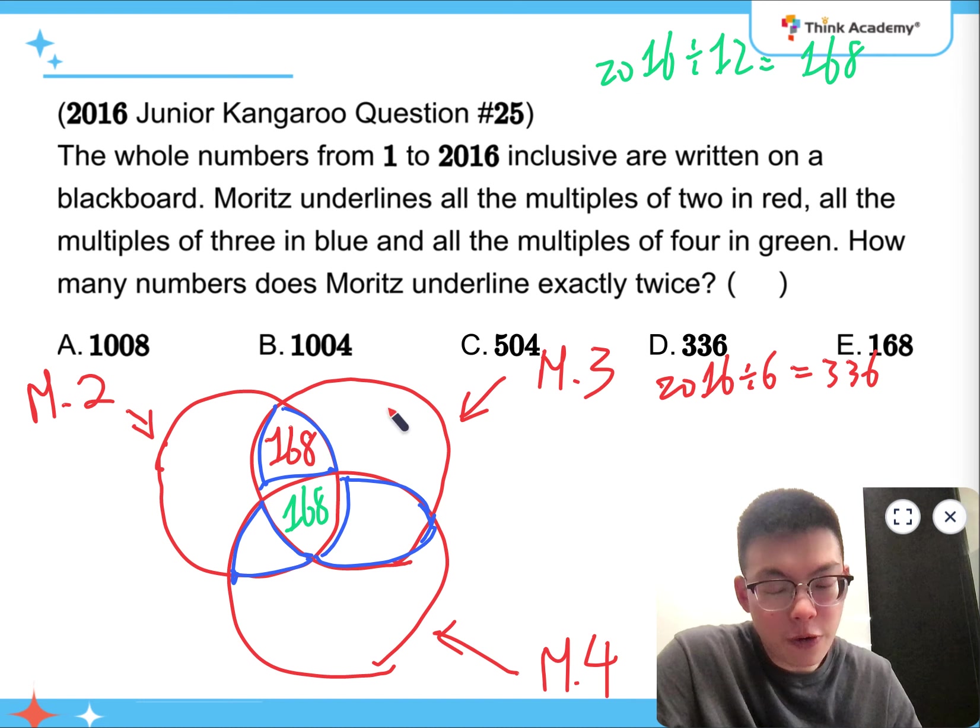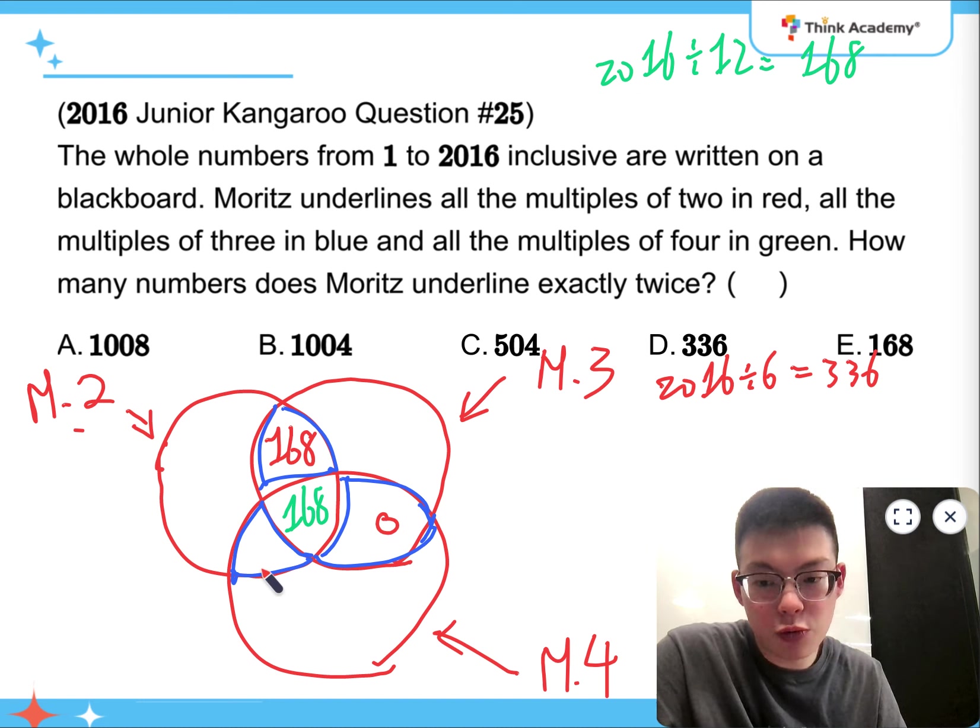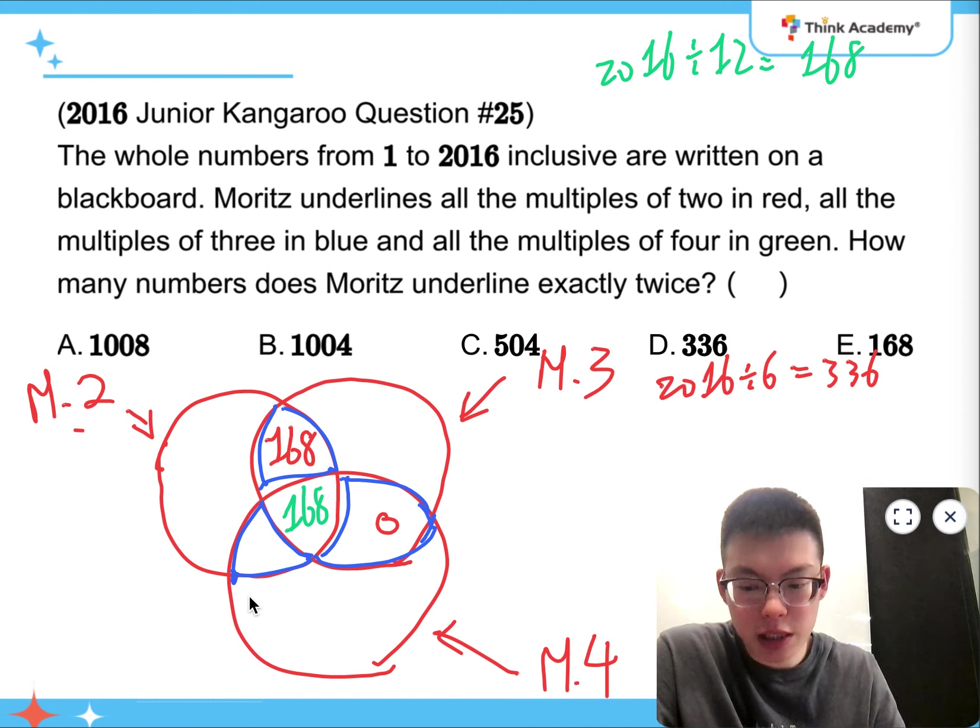Now, it goes to 3 and 4. Well, we know that 3 and 4 has the lowest common multiple of 12. So, it means that all the multiples of 12 has to be colored by the 2s as well. So, it means that there is no number which is just a multiple of 3 and 4, but not 2. But then, of course, there are some numbers which are just a multiple of 2 and 4, but not 3. So, that's going to be because the lowest common multiple of 2 and 4 is going to be 4. So, we just need to do 2016 divided by 4, and that's going to be 504. But then, we need to remove the 168. So, that's 336.